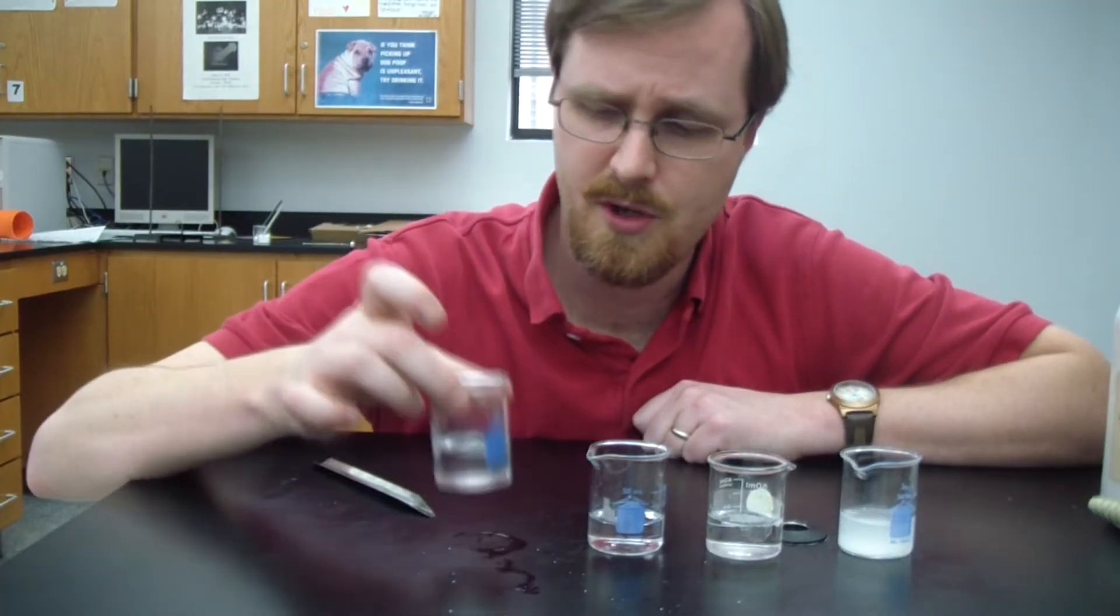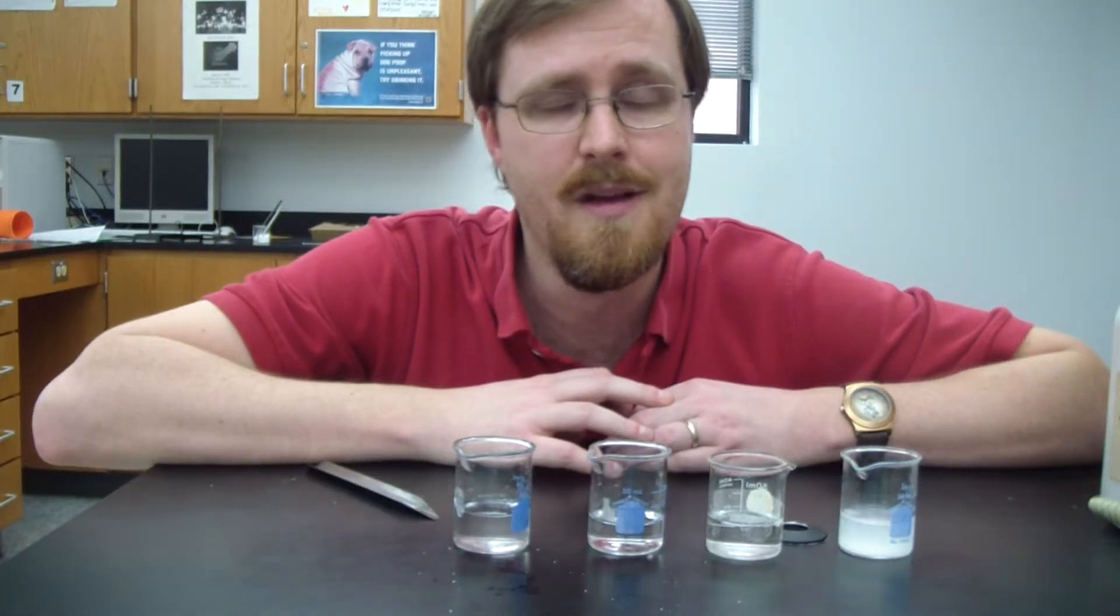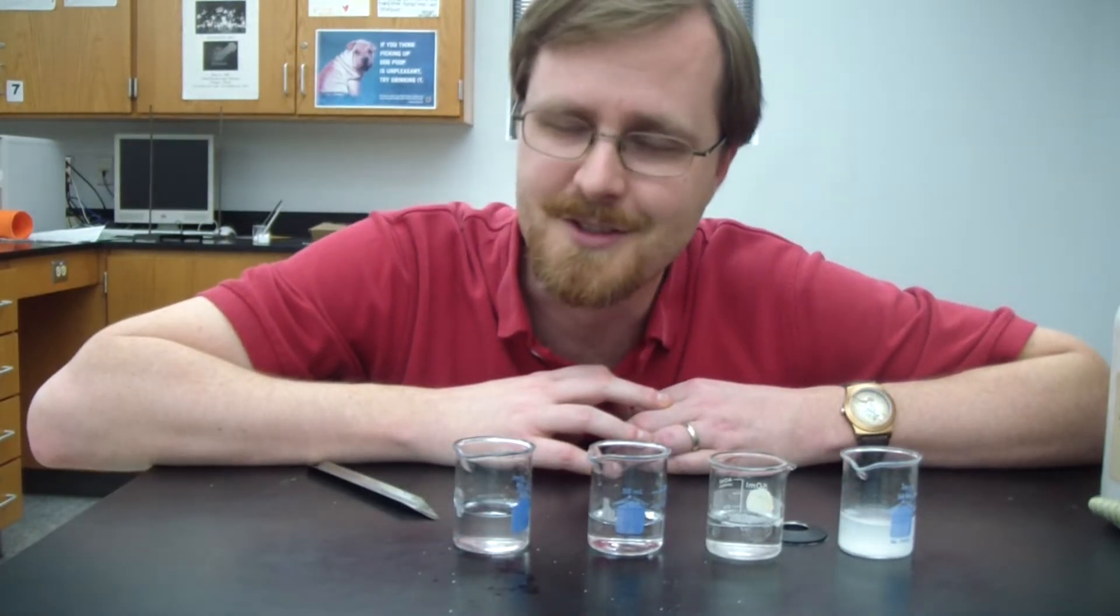Alright, so sodium chloride dissolved. Why? Well, it's an ionic compound. And what are ionic compounds made of? They're made up of ions, of course, right? The ionic compound, right? Made of ions. And what are ions? They are atoms that have a charge, positive and negative charges.